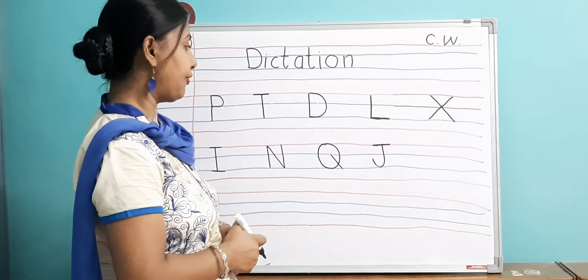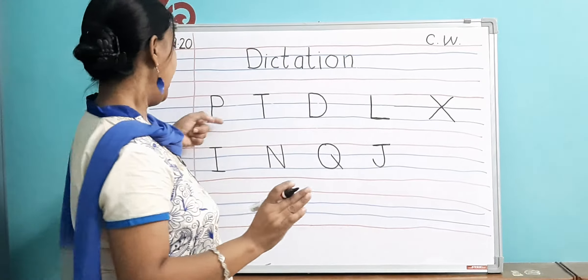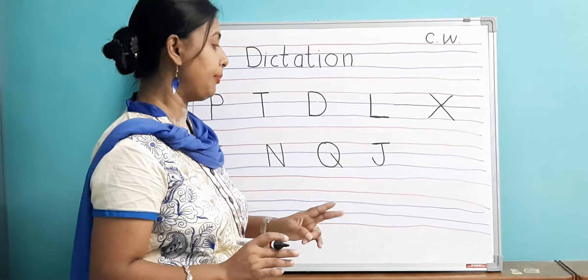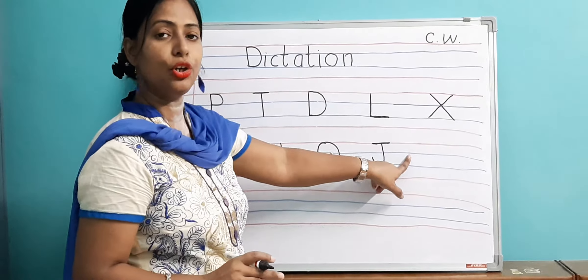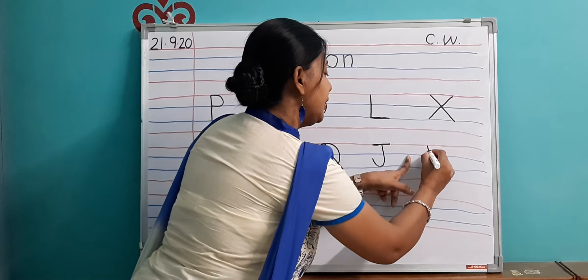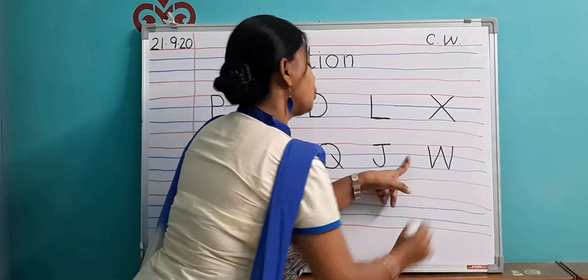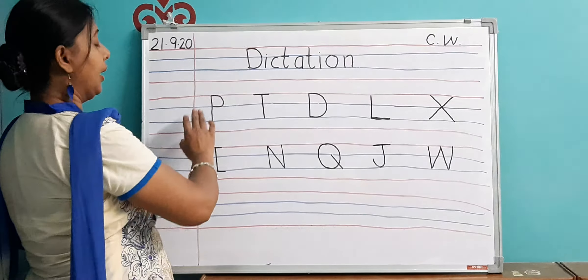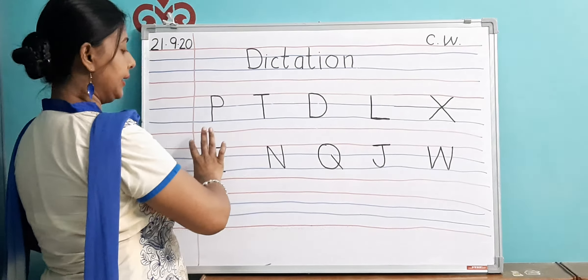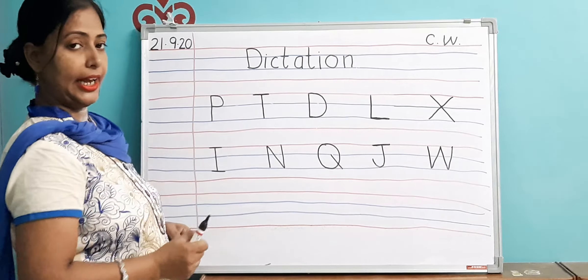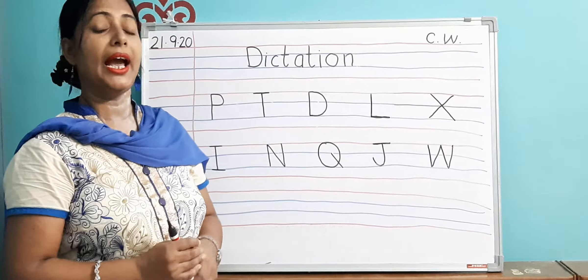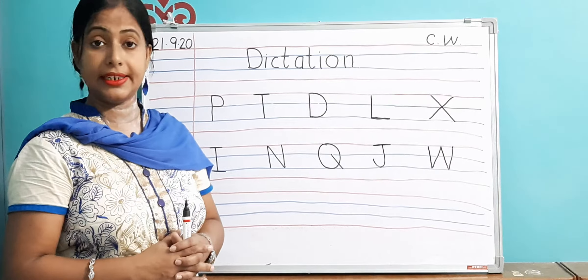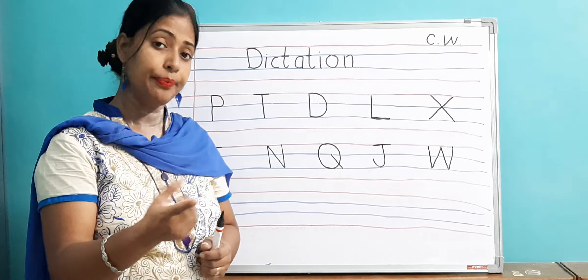In dictation I will be giving only 10 alphabets — five in the first line and five in the second line. The last alphabet is W — W for watch. You will leave one finger space and write W for watch. So five alphabets in one line and another five in the next line.